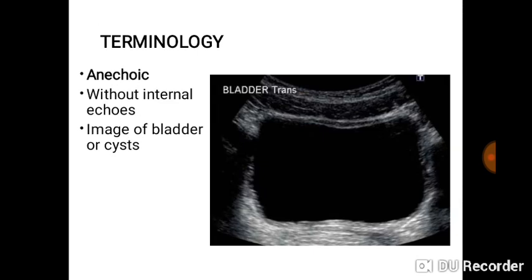'Anechoic' is different from hypoechoic. When a structure is hypoechoic, it has low echoes. But anechoic means it is completely without internal echoes — this mostly applies to fluid, like urine in the bladder, ascitic fluid, or a cyst. The urinary bladder is a good example: it is completely without internal echoes, so it is anechoic.